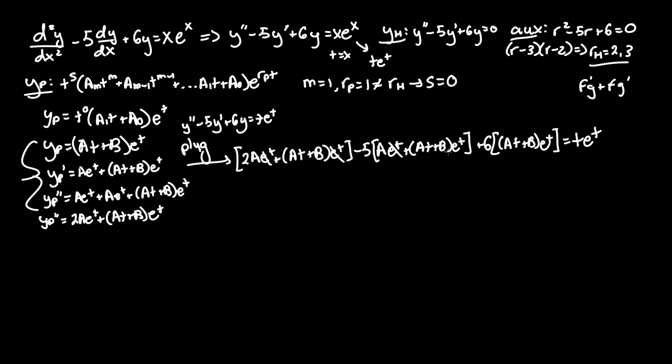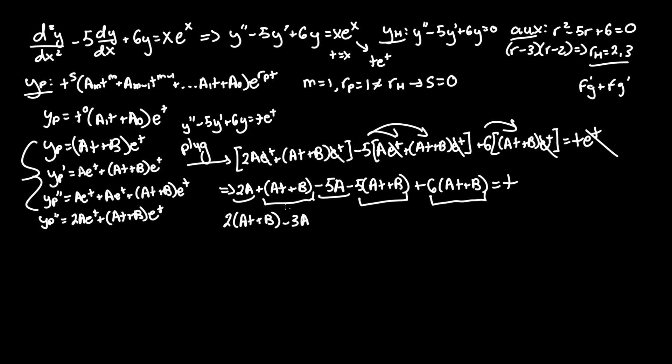First things first, cancel out every e to the t term since it's on the left and right hand side. So that becomes 2a plus at plus b minus, we can distribute the 5 here, 5a minus 5 times at plus b, and distributing the 6 to this one term is just 6 times at plus b, all equals t. Now we're trying to find what the undetermined coefficients a and b equal. The at plus b we can treat as a single variable. So we have 1 of them being subtracted by 5, being added by 6. So 6 minus 5 is 1, plus 1 is 2, which leaves us with 2 times at plus b. And we can also simplify 2a and minus 5a to minus 3a. Equals t.